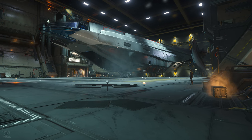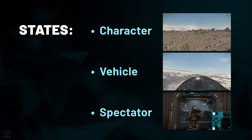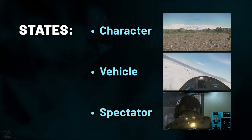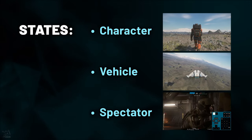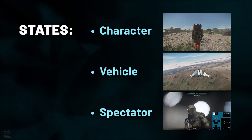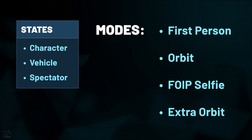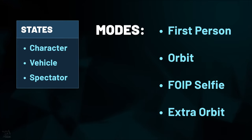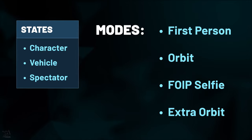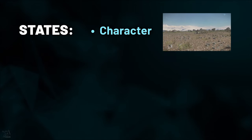To help explain the camera system, I break it down into states and modes. There are three main states of playing the game with varying camera modes under them. The first state is Character, which is when you're walking around on foot or in EVA, basically whenever you're not controlling a vehicle or turret. The second state is Vehicle, which is when you're piloting a ship, rover, controlling a turret, riding as a passenger, and so on. The third state is Spectator, which is currently only active in Private Star Marine and Arena Commander game modes. Within each of those three states, you have a few camera modes, which are First Person, Orbit, VoIP Selfie, and in some situations an additional Orbit Camera. Let's start with the Character State and work through its camera modes.